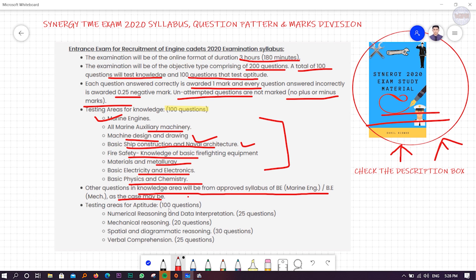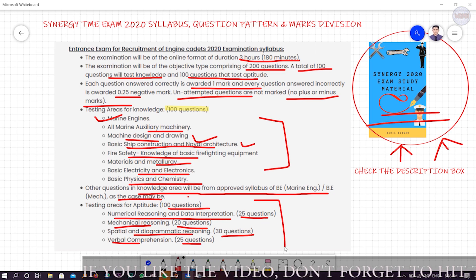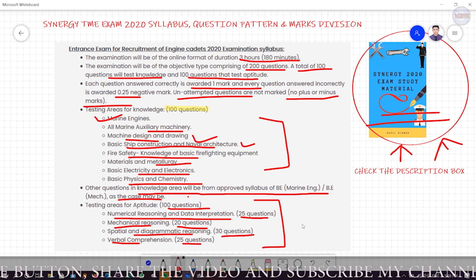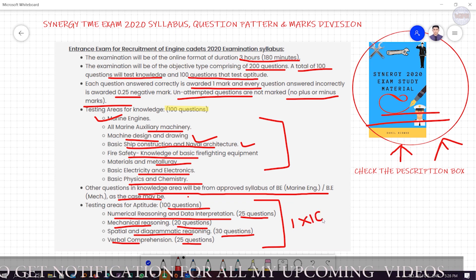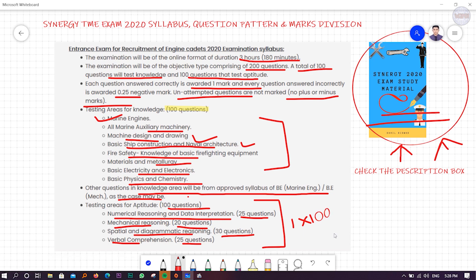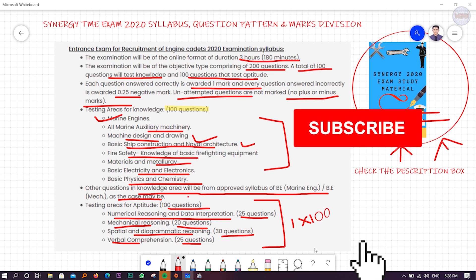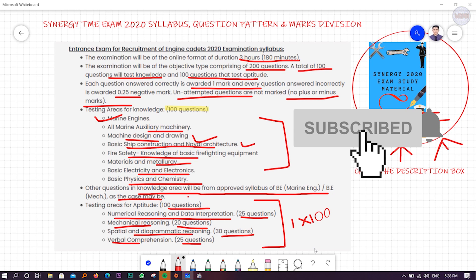Now, testing areas of aptitude: 100 questions total. Numerical reasoning and data interpretation - 25 questions, mechanical reasoning - 20 questions, spatial and diagrammatic reasoning - 30 questions, and verbal comprehension - 25 questions. These are the marks division and question pattern for the aptitude 100 marks, one mark per question. Another ebook is available for aptitude, so you can check the description box. That's the syllabus discussion part.